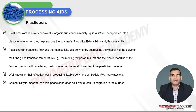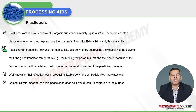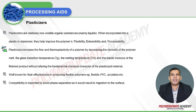The first categorization of process aids is plasticizers. Plasticizers are relatively non-volatile organic substances, mainly in liquid form. When incorporated into a plastic or elastomer, they improve the polymer's flexibility, extensibility, and processability. Plasticizers increase the flow and thermoplasticity of a polymer by decreasing the viscosity of the polymer melt, and also slightly alter the glass transition temperature and the melting temperature.